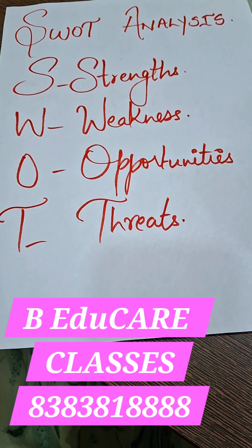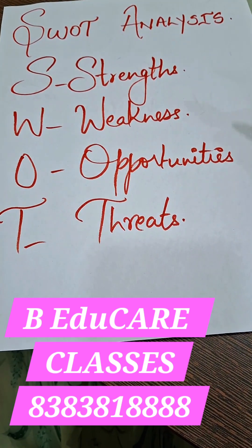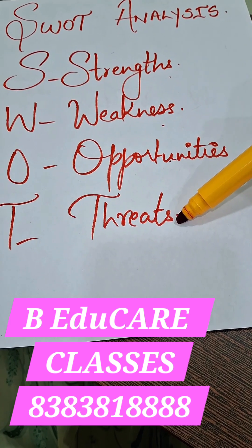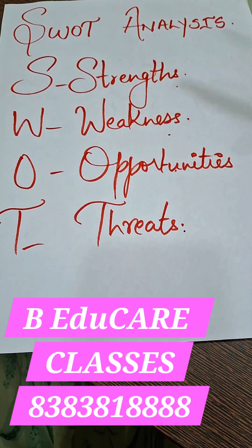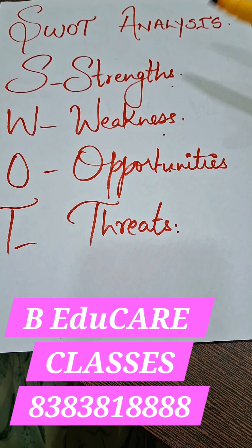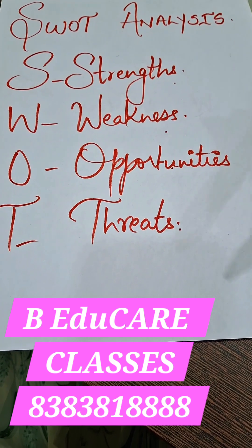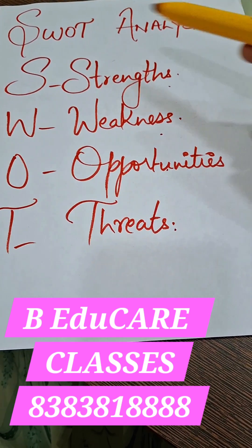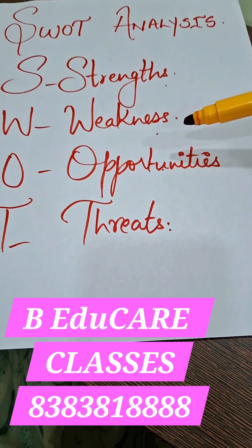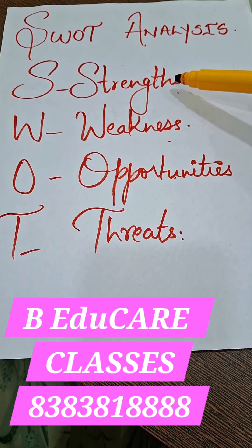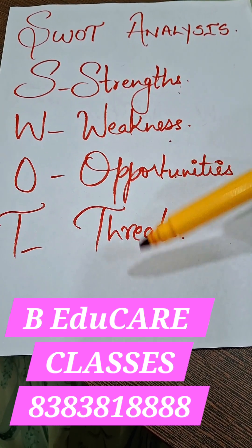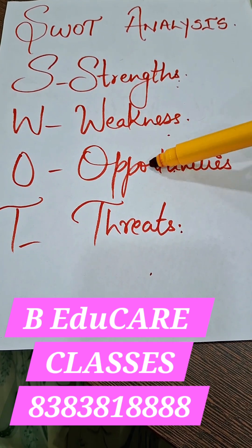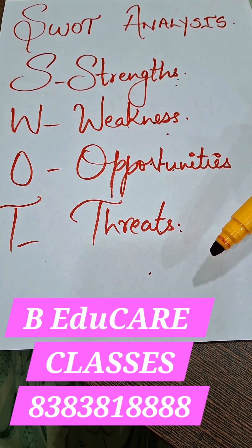Usually what you do is you start with Strength, Weakness, Opportunities, and Threats. SWOT is basically a business term, and those who have done commerce or are from a commerce background can better understand this term. So you always start with Strength, then go to Weakness, Opportunities, and Threats — that is the standard order.